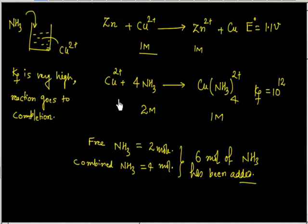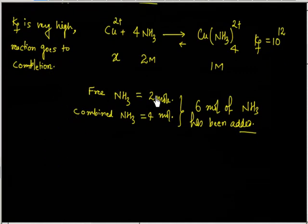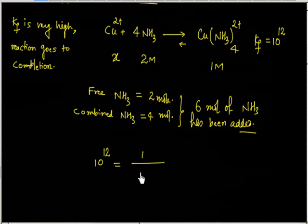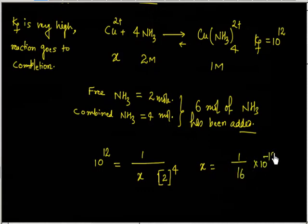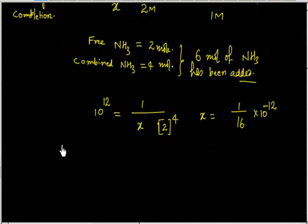Now, this is an equilibrium reaction — the complex [Cu(NH₃)₄]²⁺ will dissociate to give x moles of Cu²⁺. The formation constant Kf = 10¹² equals 1 divided by x times [NH₃]⁴, which is 2 to the power 4. So x = 1 divided by (16 × 10¹²).